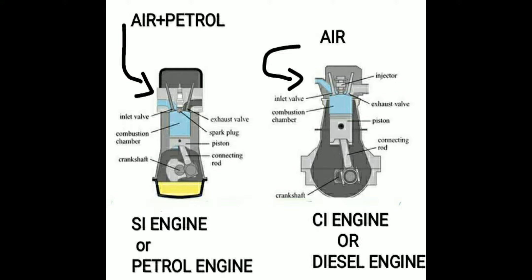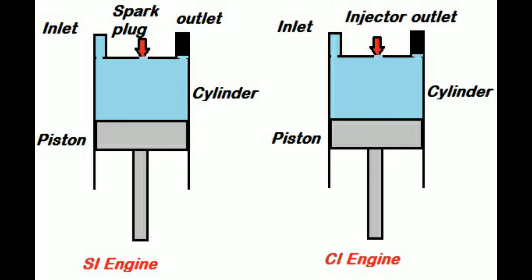Petrol is mixed with air and only used in the spark ignition engine. In the case of the right hand side, that is called the CI engine or diesel engine. There is an injector present in the middle. The fuel is injected by the injector, but the inlet valve only takes in atmospheric air. So it is ignited by auto-ignition — when the compression ratio is high, the diesel is automatically ignited. You can clearly see that the spark plug is present in the petrol engine and the injector is present in the compression ignition engine, that is the diesel engine.